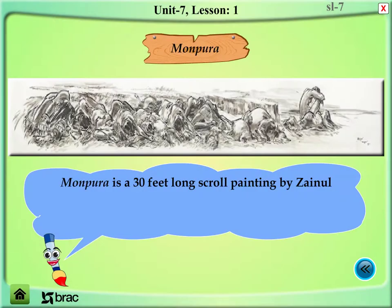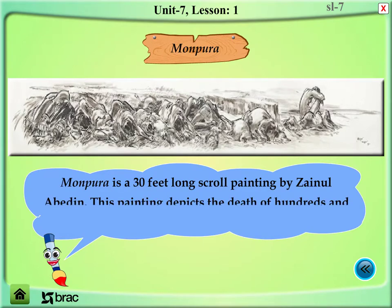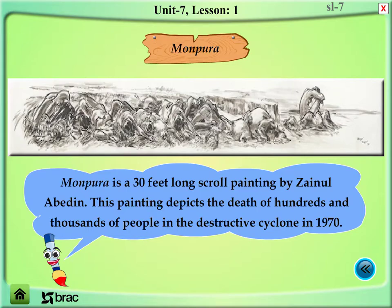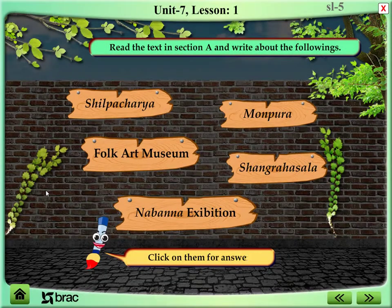Monpura is a 30-feet-long scroll painting by Zainul Abidin. This painting depicts the death of hundreds of thousands of people in the destructive cyclone of 1970.